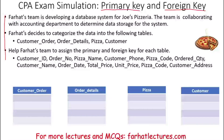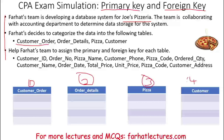Farhat's team is developing a database system for Joe Pizzeria — basically helping a local pizzeria. The team is collaborating with the accounting department to determine the data storage for the system. Farhat's team decides to categorize the data into the following four tables: one, customer order; two, order details; three, pizza; and four, customers. Within the tables, we're going to have fields and records, and so on.